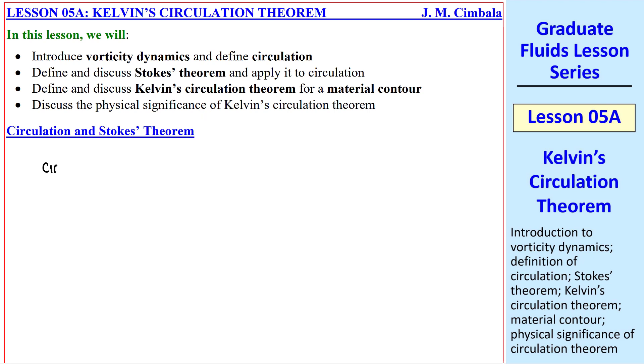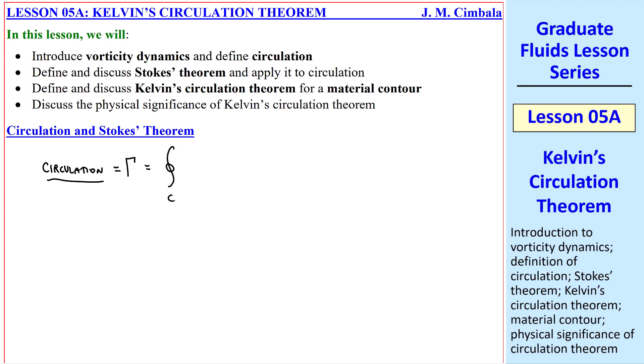First, let's define circulation, which we give the symbol capital gamma. In tensor notation, it's a contour integral of ui dsi, or in vector notation, integral of u dotted with ds, since this is a dot product. Where c is some kind of a closed contour, which is why we put this little circle on the integral. We'll let A be the area inside that contour. At some point along the contour, we have the velocity vector u, and then vector ds is tangent to the contour at that point. So you march around this contour and integrate u dot ds. This is what we're calling the circulation.